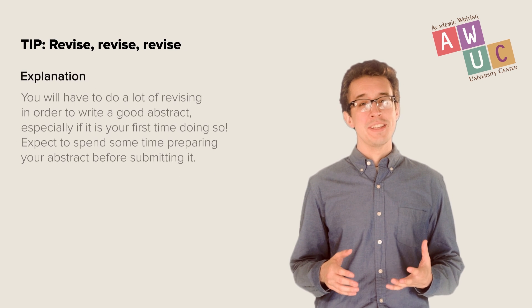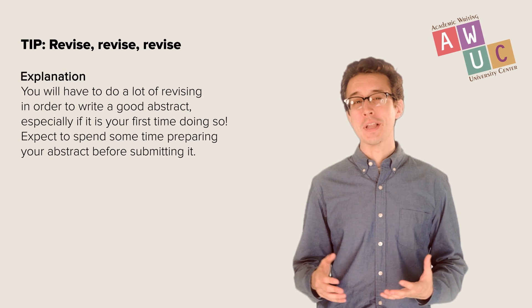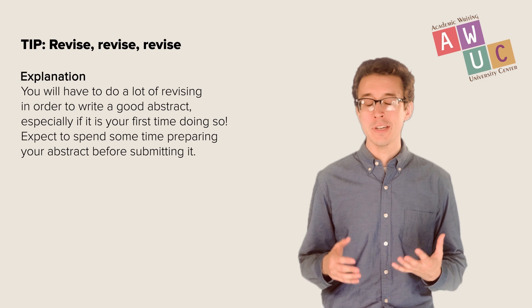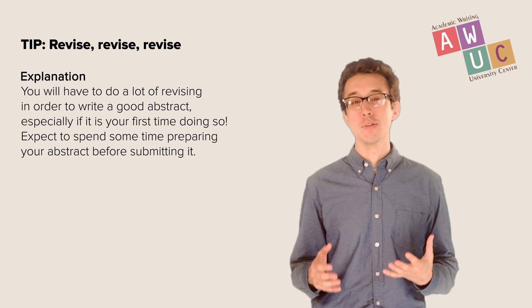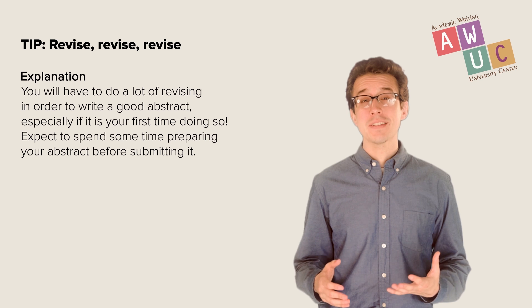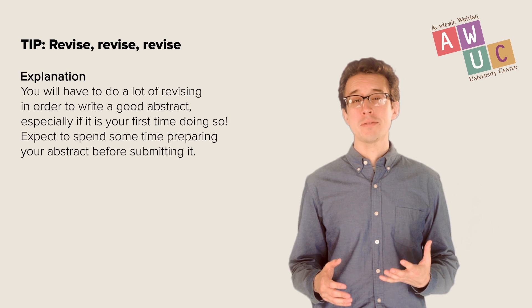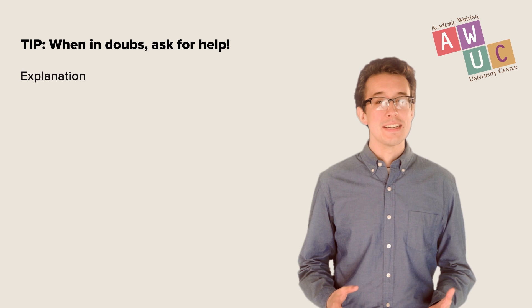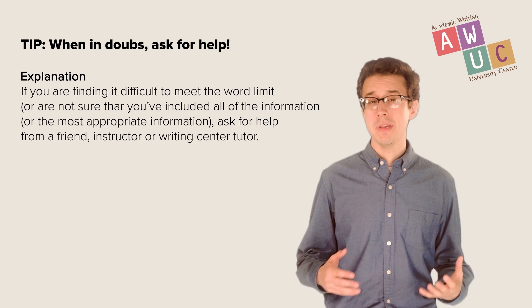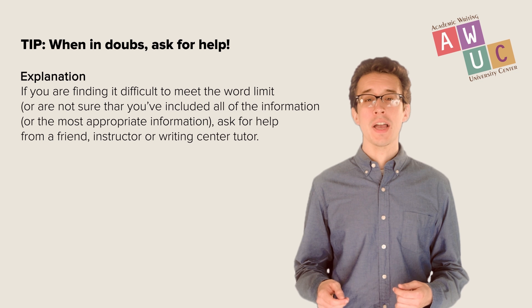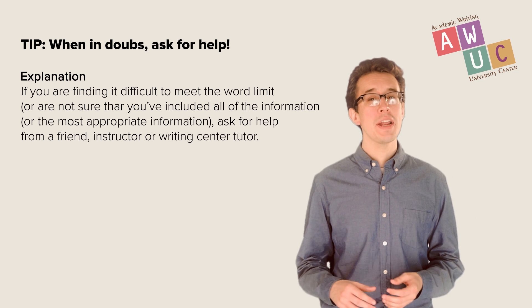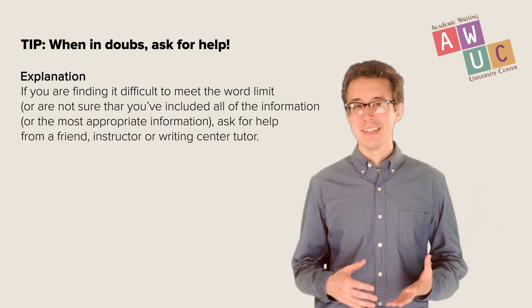Number six: whenever possible, it is a good idea to write the abstract last so that it provides as accurate an overview of the work as possible. Number seven: you will have to do a lot of revising in order to write a good abstract, especially if it is your first time doing so — expect to spend some time preparing your abstract before submitting it. Number eight: if you're finding it difficult to meet the word limit, seek the help of an outside reader, such as a friend or writing tutor, to help you cut the excess words.